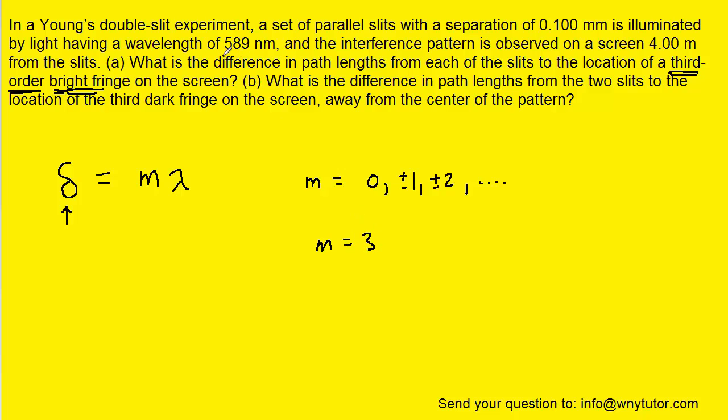The wavelength is given to us directly as 589 nanometers. So we can go ahead and plug in for m, for the third order bright fringe, and then multiply it by the wavelength of 589 nanometers. You should get 1.77 times 10 to the third nanometers.